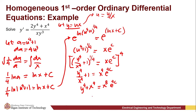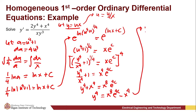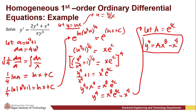Solving for y⁴: y⁴ = x⁸ · e^(4C) − x⁴. Letting capital A = e^(4C), the solution becomes y⁴ = Ax⁸ − x⁴. This is the solution for the homogeneous differential equation y' = (2y⁴ + x⁴) / (xy³).